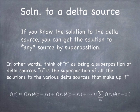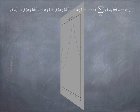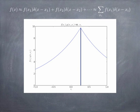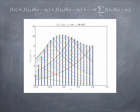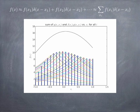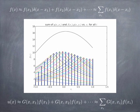If we have some distributed source f(x), we could think of it as f evaluated at x₁ times the delta function at x₁, plus f evaluated at x₂ times the delta function at x₂, and so on — an integral over point sources. To get the solution, you find the solution to a point source, which is the Green's function, and then superpose all those point sources to get the solution for the distributed source.